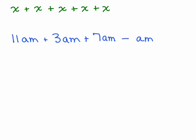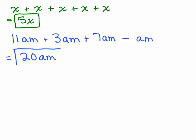Here are two more to try. Is this first one x plus x plus x plus x plus x? I've got 5 of the same things, or think of adding 5 coefficients of 1 — the answer is 5x, not so bad! These next ones are all the same variable parts too. I've got am, am, am, am, am. Remember that last one is really like a 1 in front, so: 11 plus 3 plus 7 is 21, minus 1, you should get 20am. So that's how you combine like terms and simplify as much as possible.